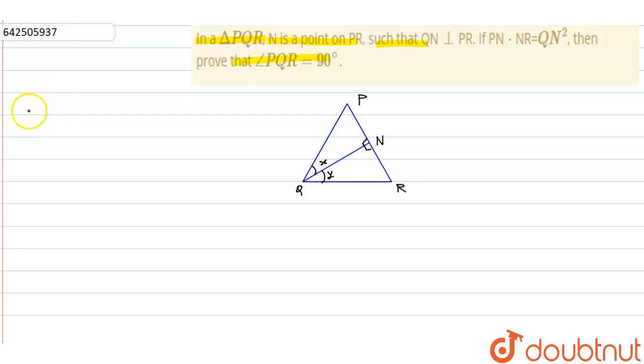Now we have given in the question that PN into NR is equal to QN squared, and also QN is perpendicular to PR. And now we have to prove that